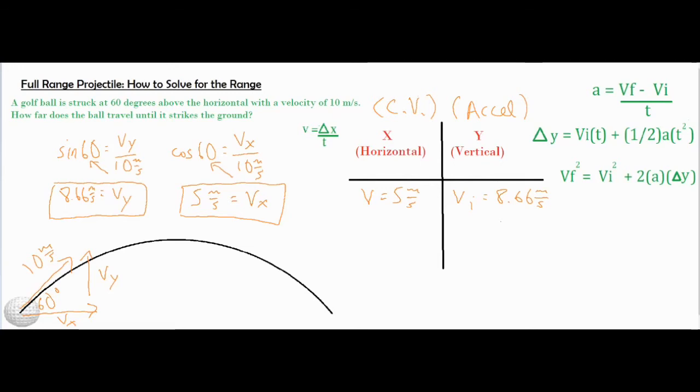I finished solving for the X and Y component of our 10 meters per second. I used the sine function so that I could use the opposite divided by our hypotenuse, and then I used the cosine function so I could use adjacent over hypotenuse. I cross-multiplied the 10 up and over in each case, and I got 8.66 meters per second for the Y component and 5 meters per second for the X component.